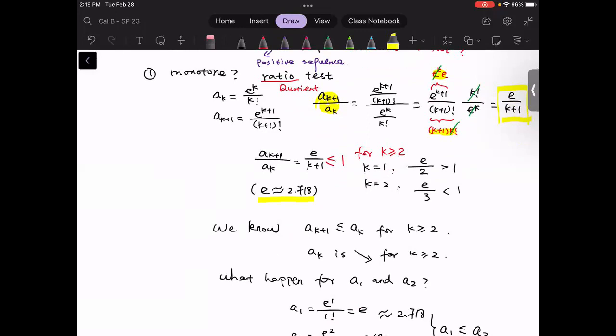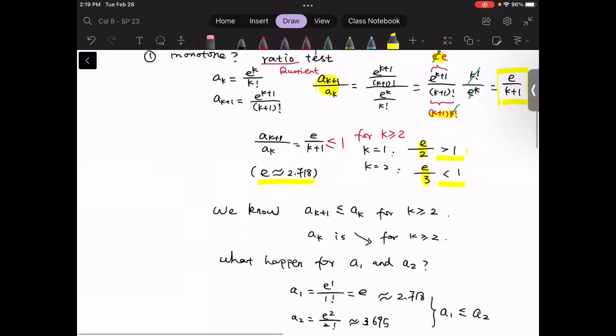Let's, for example, compute the first few numbers. Whenever k equals one, this ratio will be e over two. Whenever k equals two, that will be e divided by three. Then we can see it will be greater than one for k equals one, but less than one for k greater than two.